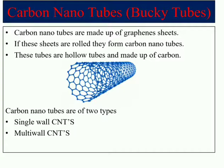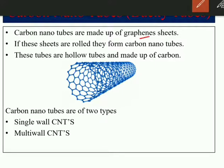Next, let us move on to another important nanomaterial — carbon nanotubes, or CNTs, also called buckytubes. Carbon nanotubes are made up of graphene sheets. These sheets are rolled to form hollow tubes made up of carbon atoms, with size ranging from 1 to 20 nanometers.